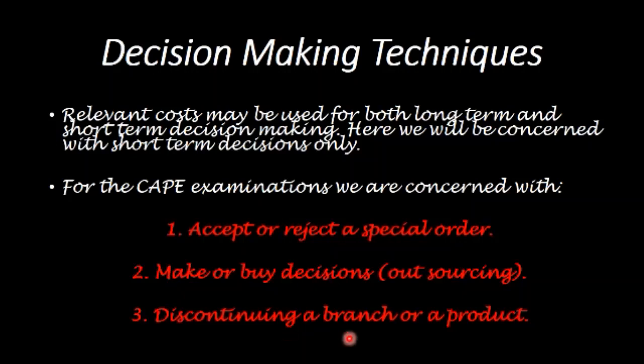The third technique is discontinuing a branch or a product. You may be producing more than one product — X, Y, Z — and one of the products is making a loss, and you have to decide whether to discontinue it. Or it could be a branch: you have different branches around the country and one of them is making a loss, operating at a loss, and you have to decide whether to close it.